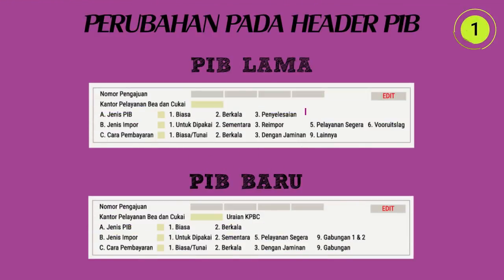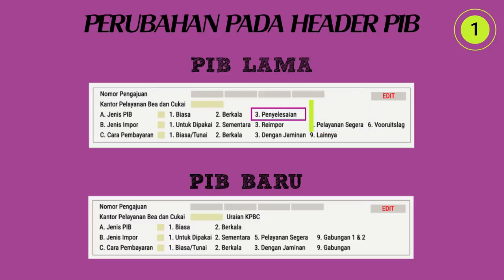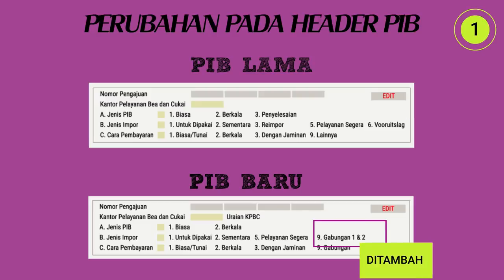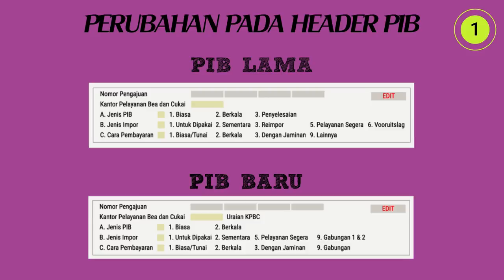Perubahan pada header PEB: (1) PEB penyelesaian hilang — tidak ada double PEB; penangguhan dan impor sementara diselesaikan dengan SKEP pembebasan atau pencairan jaminan. (2) Jenis impor re-impor dan furislak hilang; re-impor dan furislak merupakan jenis impor untuk dipakai, juga merupakan fasilitas yang dimasukkan di detail barang. (3) Tambahan jenis impor gabungan impor untuk dipakai dan impor sementara — dalam beberapa kasus terdapat barang impor sementara yang datang dalam satu dokumen dengan barang impor untuk dipakai.